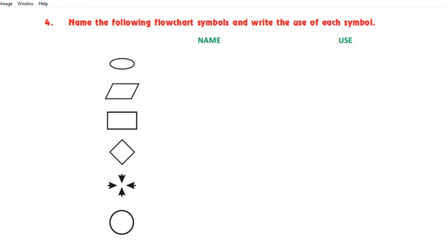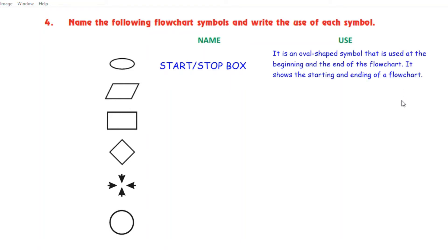Look at the first symbol children. The name of this symbol is start/stop box and the use of this symbol is: it is an oval shaped symbol that is used at the beginning and the end of the flowchart. It shows the starting and ending of a flowchart.